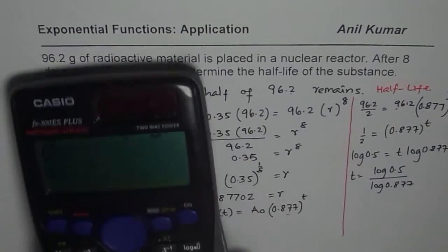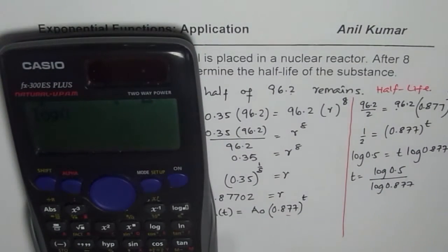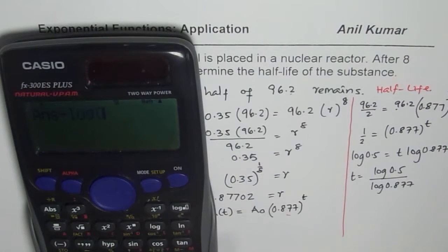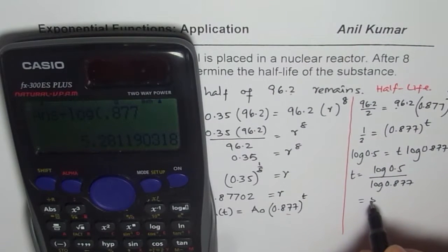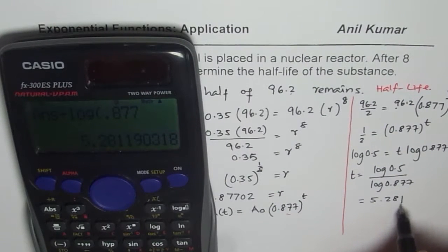So let us calculate the value. So we have log of 0.5 divided by log of 0.877. So we get t equals to 5.281.